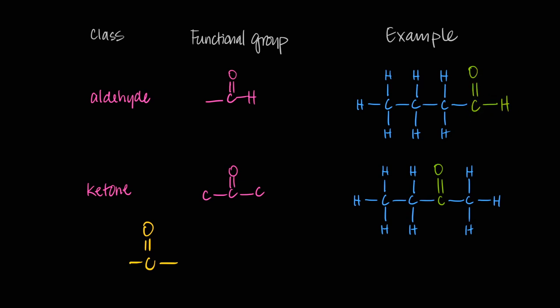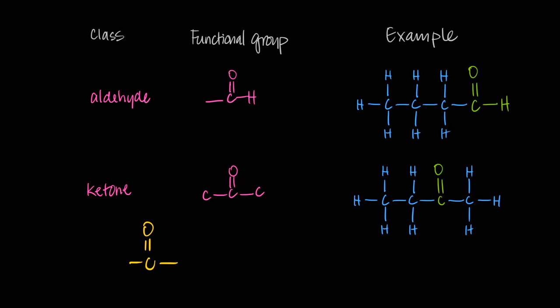To identify an aldehyde, look at the molecule and see if the ends have a C double bond O with an H — that's CHO, the aldehyde. A C double bond O anywhere else in the molecule — not at the ends — is a ketone, because on both sides it's bonded to carbon atoms. Both aldehydes and ketones have a carbonyl carbon, and collectively they're called carbonyl compounds.